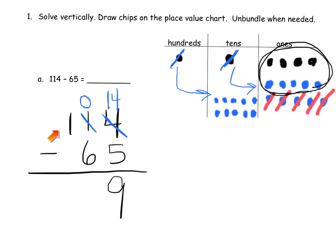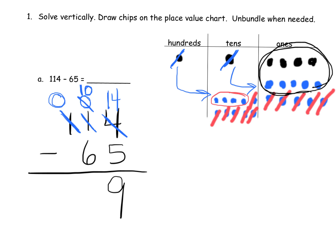Now, recording what we did over here: we unbundled 100, leaving zero 100s, and that gave us 10 tens in the tens column. We can see that — we unbundled 100 and got 10 in the tens column. So now we can do 10 minus 6. We cross off six of them, and that leaves us with four. So 10 take away six equals four. We have nothing in the hundreds anymore, so zero take away zero is nothing. Our answer is 49.